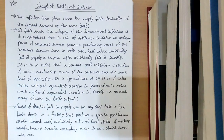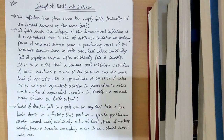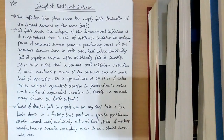Bottleneck inflation falls under the category of demand-pull inflation, as it is considered that in this case the purchasing power of the consumer remains the same — both before the drastic fall of supply and after the drastic fall of supply.